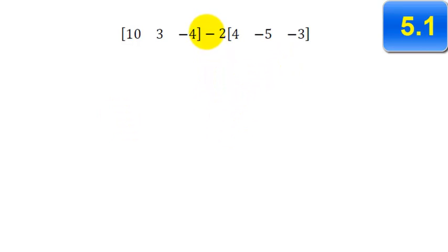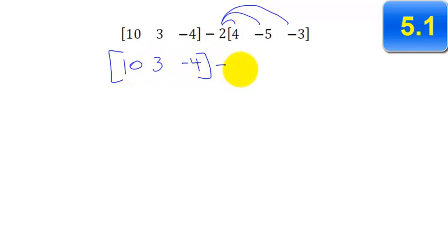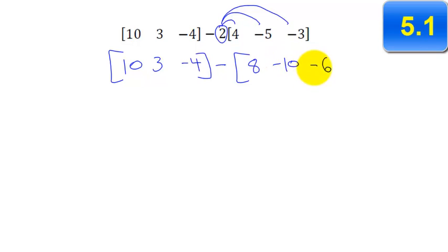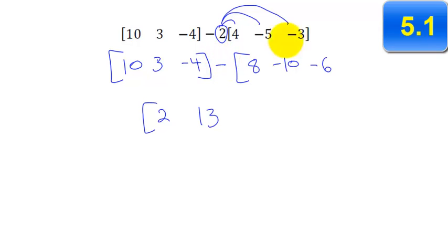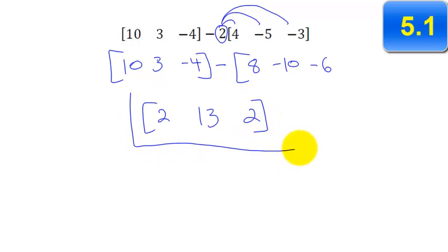Here is a simple subtraction operation but we also have a scalar in front. So I'm going to take this 2 and distribute it, giving the matrix 10, 3, negative 4, and now we're subtracting the matrix 8, negative 10, and negative 6. If you want to distribute the negative with it, that's fine — then all the signs would be opposite and this would be a plus. So we have 10 minus 8 equals 2, then 3 minus negative 10 equals 13, and negative 4 minus negative 6 means plus, so negative 4 plus 6 is 2. There is our resulting matrix.